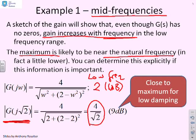The maximum is close to the peak for low damping. If you put in the natural frequency, you'll find this 9 decibels is pretty close to the peak. It's not exact, but it's pretty close.